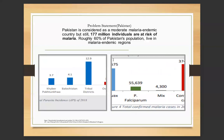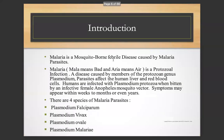Problem statement for Pakistan: Pakistan is considered a moderate malaria endemic country, but still 177 million individuals are at risk of malaria. Roughly 60% of Pakistan's population live in malaria endemic regions.